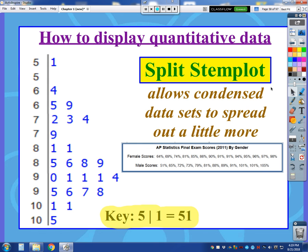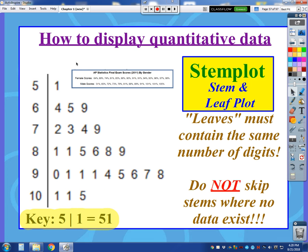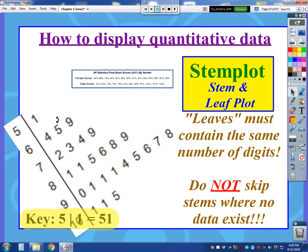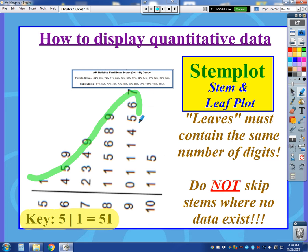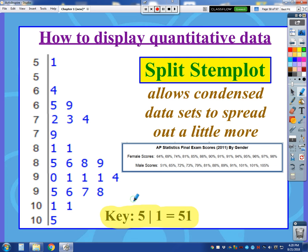Now there is a variation on a stem plot called a split stem plot. And the key thing about using a split stem plot is it allows condensed data sets to spread out a little more. So in this case, we have scores from the fifties all the way up into the hundred percents. And really, if I were to look at this data set, I could describe the shape of it fairly well. I would have to, again, think of this kind of sideways. And to me, the shape of this distribution would be skewed left.